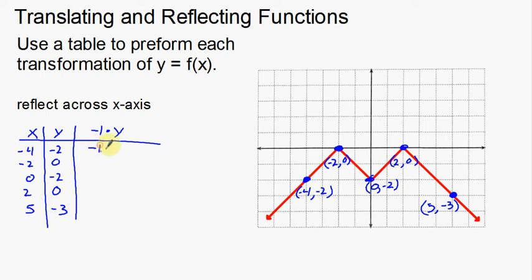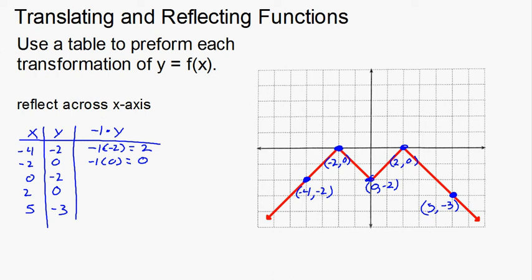So in the table, I take negative 1 times negative 2 to get positive 2. I take negative 1 times 0 to get 0. I take negative 1 times negative 2 to get 2. I take negative 1 times 0 to get 0. And I take negative 1 times negative 3 to get positive 3.